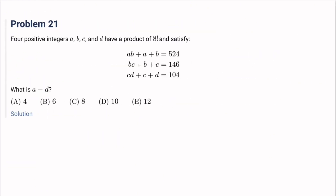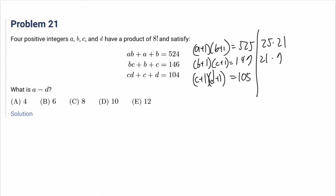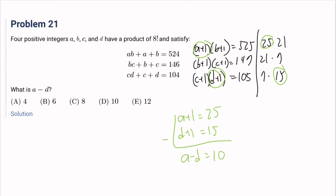Number 21: positive integers A, B, C, D have a product of 8 factorial and satisfy three conditions. Adding 1 to each side: (A+1)(B+1) equals 525, (B+1)(C+1) equals 147, (C+1)(D+1) equals 105. Factoring: 525 equals 25 times 21, 147 equals 21 times 7, 105 equals 7 times 15. So A+1 equals 25 and D+1 equals 15, giving A minus D equals 24 minus 14 equals 10. The answer is D.